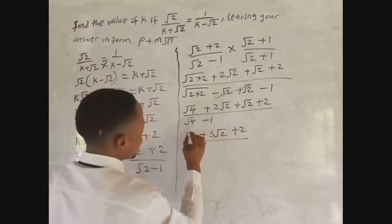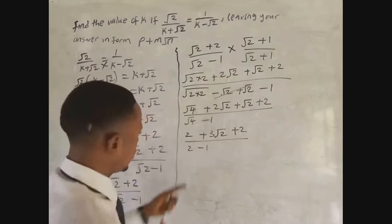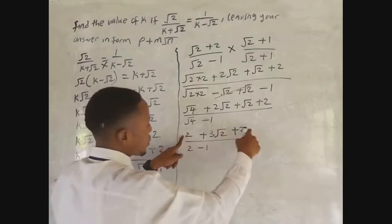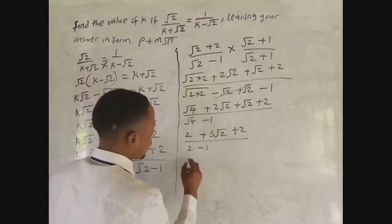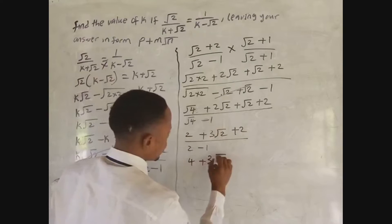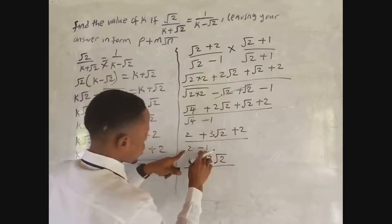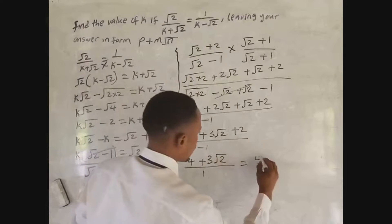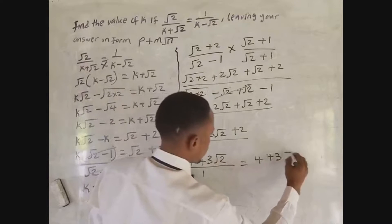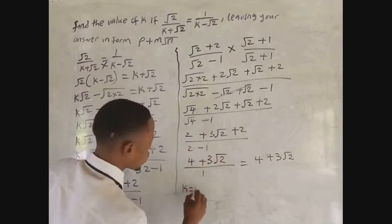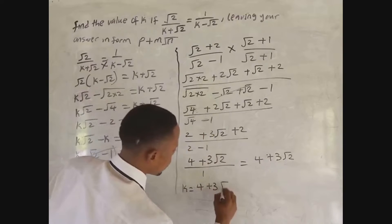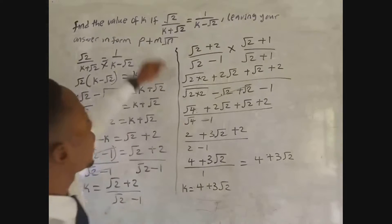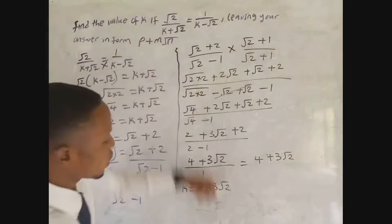So we have 4 + 3√2 all over 1, which gives us 4 + 3√2. Therefore k = 4 + 3√2. This is in the form p + n√2 where p = 4, n = 3, and the value under the root is 2.